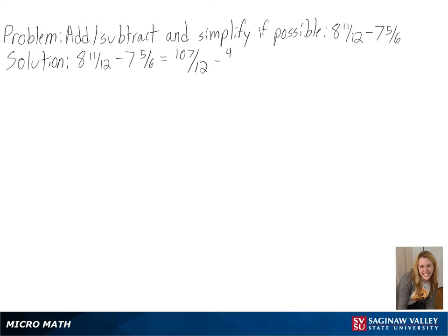Converting these, we get 107 over 12 minus 47 over 6.